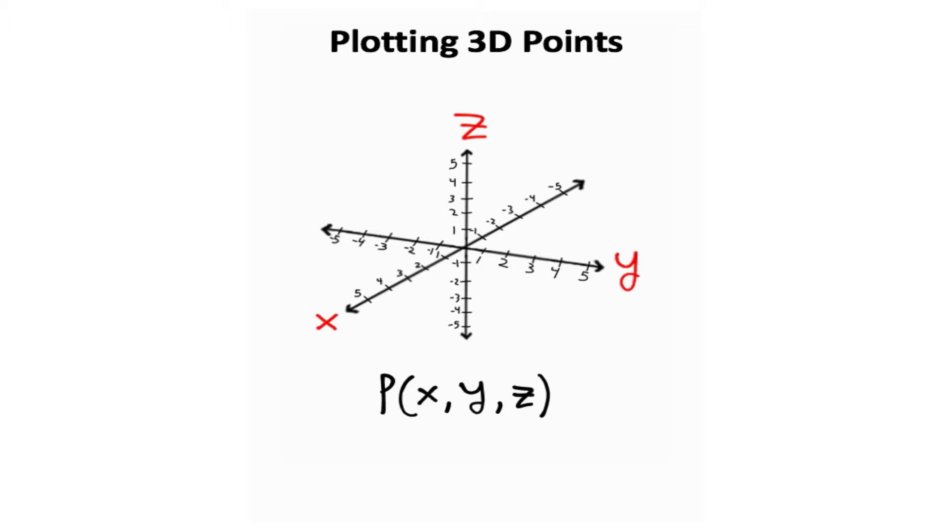And you plot points similarly in three dimensions that you do in two dimensions. This time it's gonna be x and y and z. So let's say we want to plot points like this. Well, if I want to plot this first point, all I need to do is look at where my coordinates are telling me to go. So I need to travel negative three units in the x direction, three units in the y direction, and four units up in the z direction. And that's gonna be my point one.